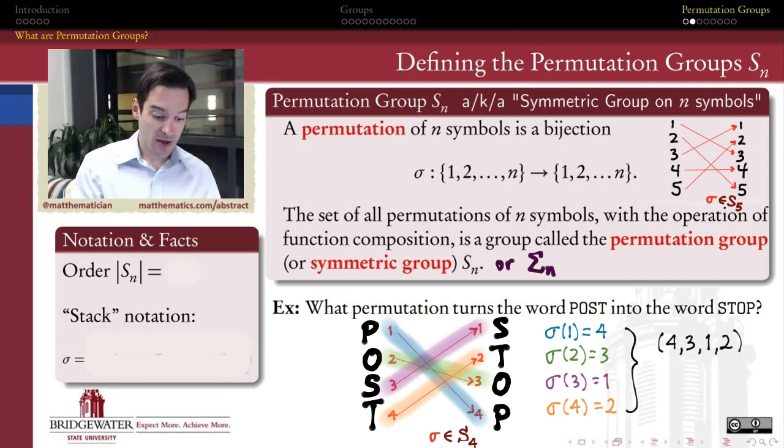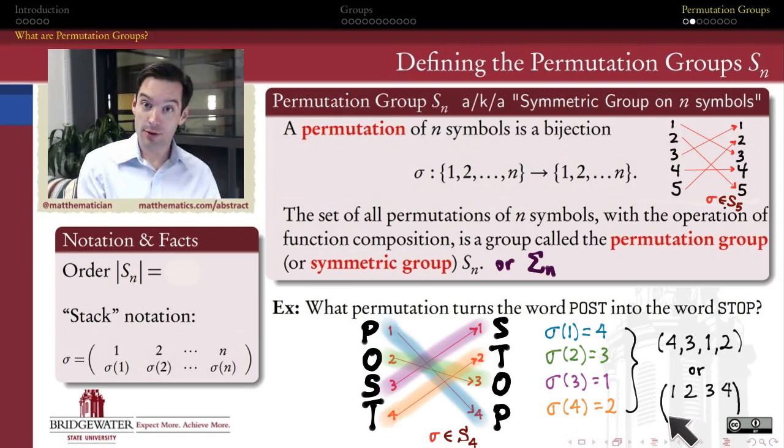This also becomes what I call stack notation. We take 4, 3, 1, 2 and line them up underneath their pre-images 1, 2, 3, 4 in a notation that looks like a matrix, though we use round parentheses. In this notation, we match up each element of the domain with its image under this function σ. This gives a handy, more compact way of expressing this permutation.